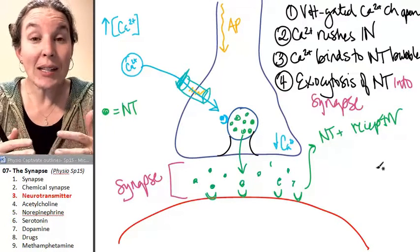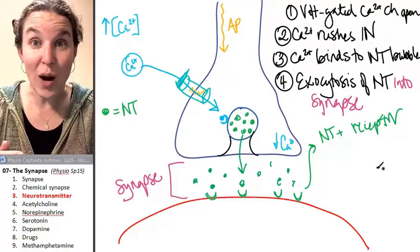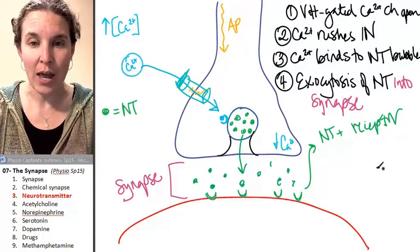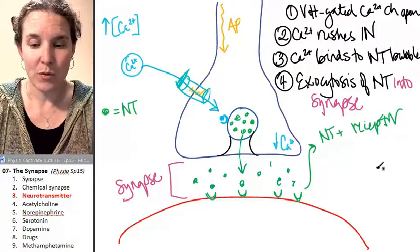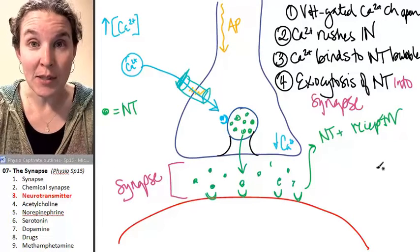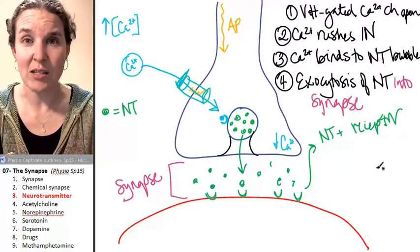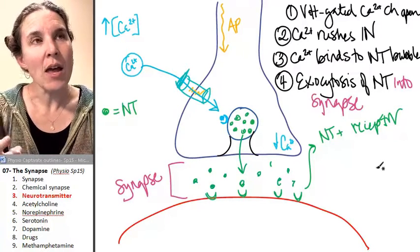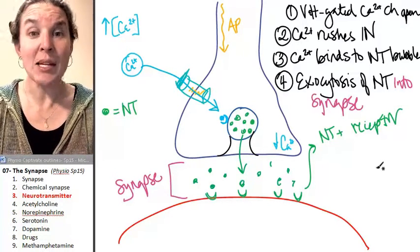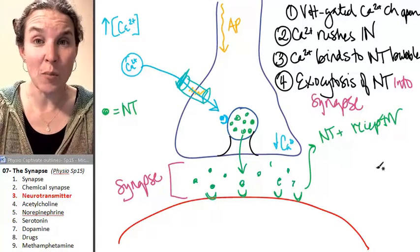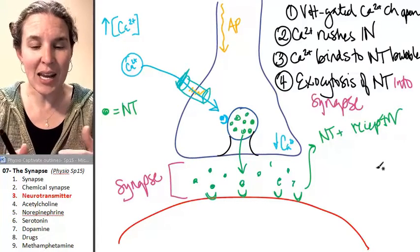So as quickly as an action potential can travel down a neuron and dump neurotransmitter into the synapse, it removes the neurotransmitter just as fast. That way, if I want to send the message again, I'm going to send another action potential and dump more neurotransmitter.